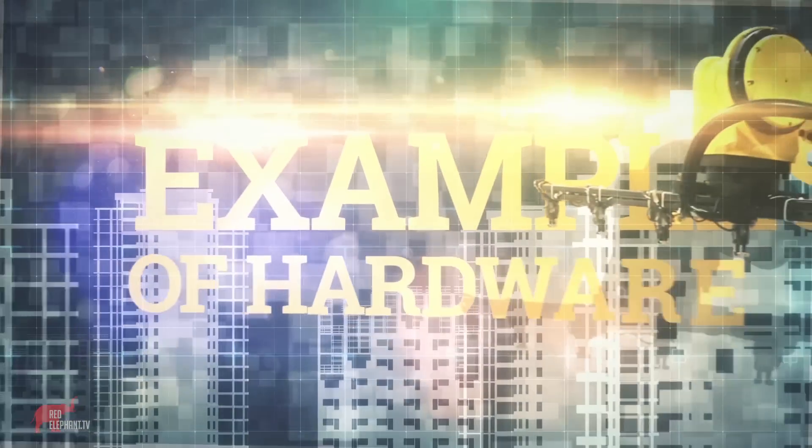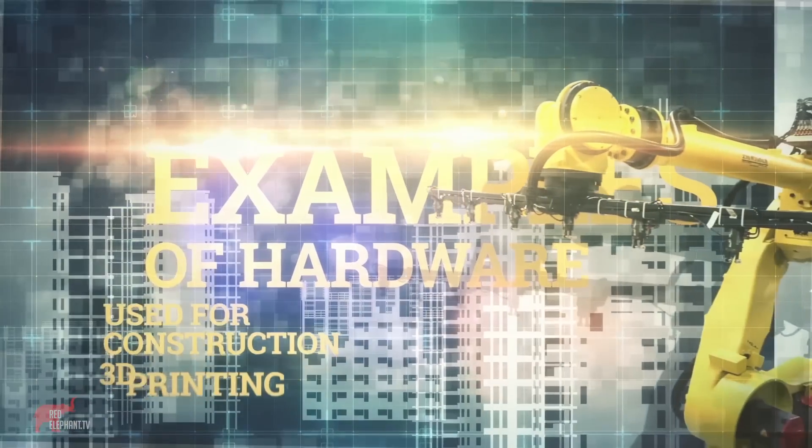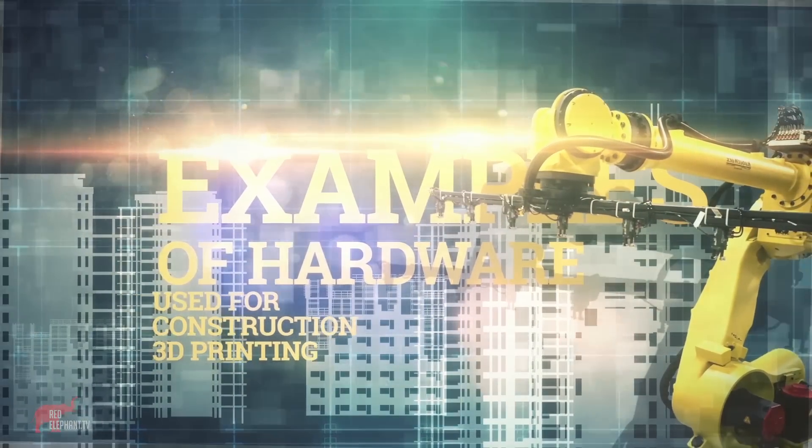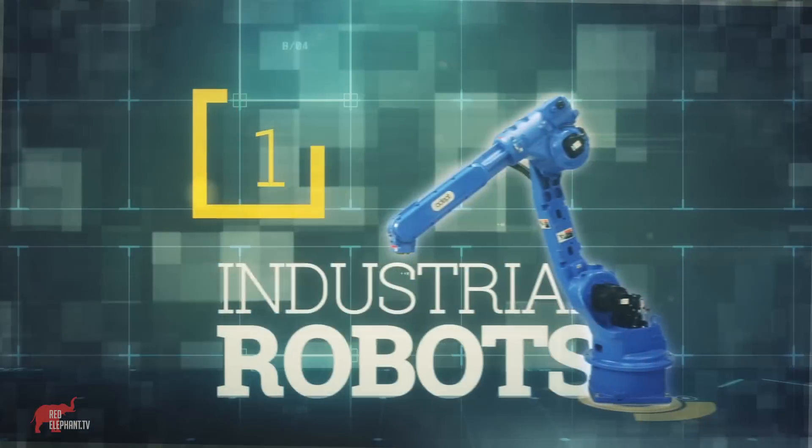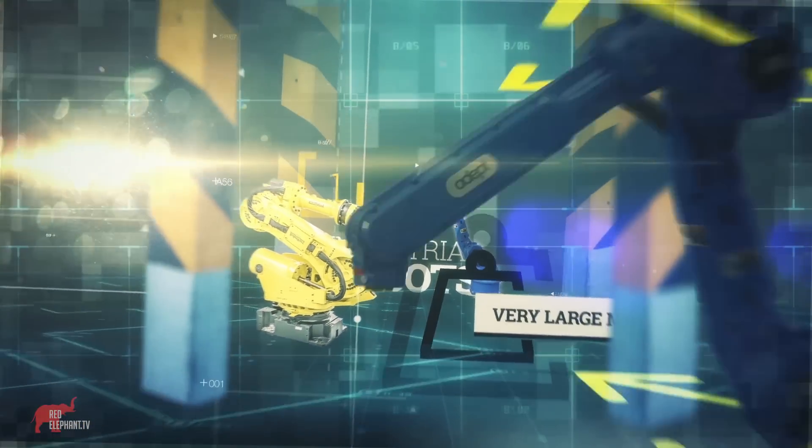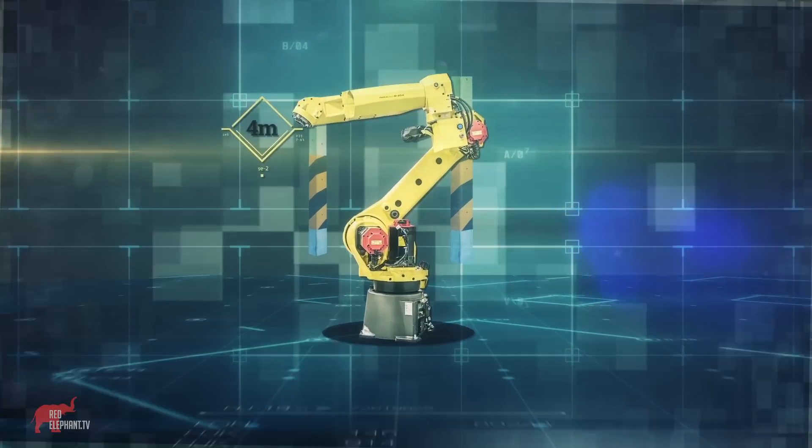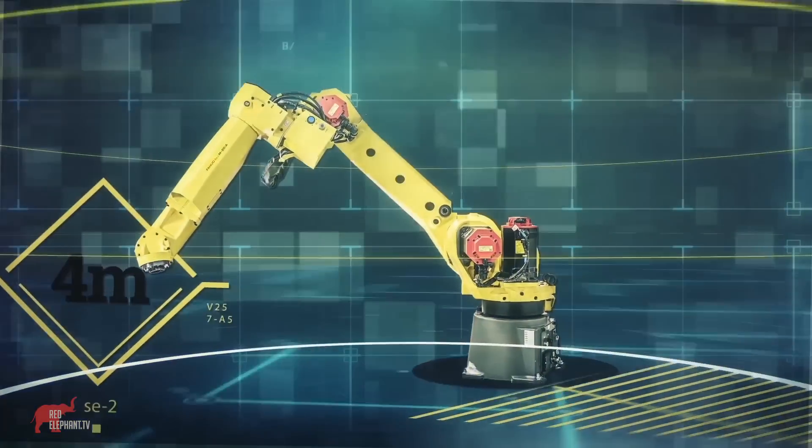Let's take a look at some examples of hardware used for construction 3D printing. Industrial robots. They have a very large mass and a small operating area. For example, a robot with a reach of only 4 meters weighs 5 tons.